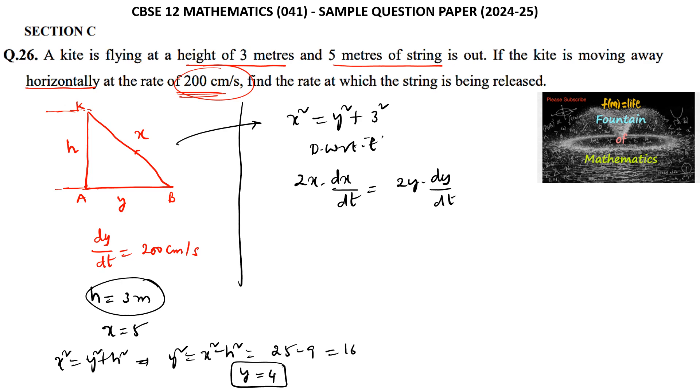Substituting values: 2(5)(dX/dt) = 2(4)(200). So dX/dt = (2 × 4 × 200)/(2 × 5) = (8 × 200)/10.